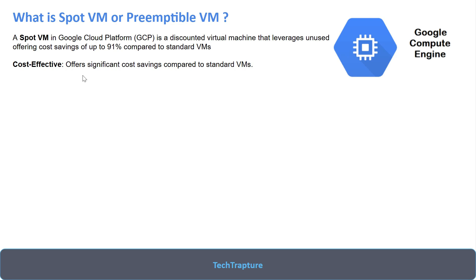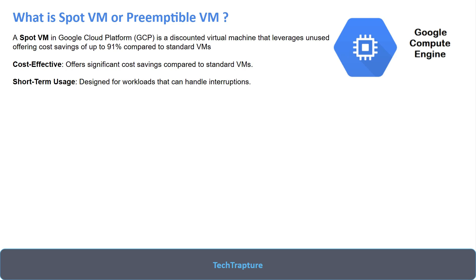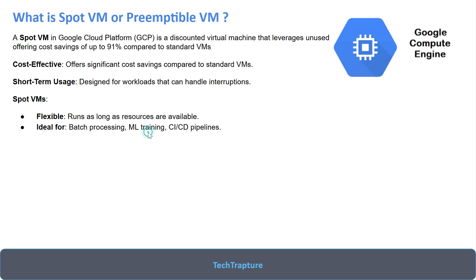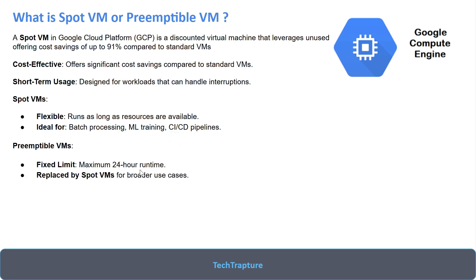Whenever you get a question in an exam related to fault-tolerant and cheaper workloads or cost saving, you can go with the Spot VM option — but read the question carefully because it applies to fault-tolerant workloads. Spot VMs are designed for shorter workloads where your workload can handle interruptions, as they can be interrupted at any time. Spot VMs can run as long as resources are available. They are ideal for batch processing, ML training, and CI/CD pipelines. Preemptable VMs have a maximum limit of 24 hours and have recently been replaced by Spot VMs.